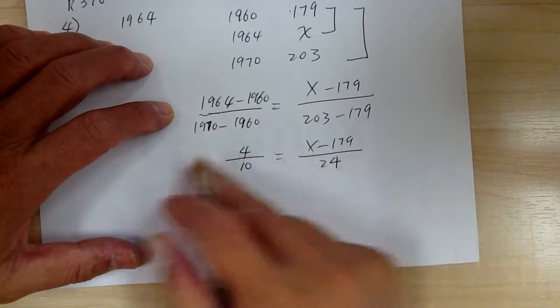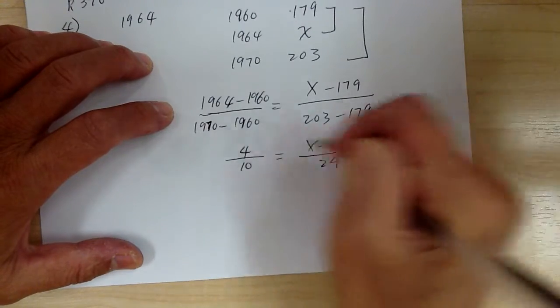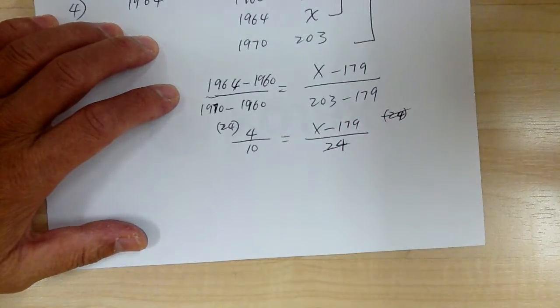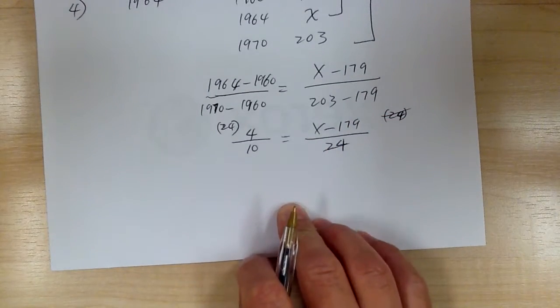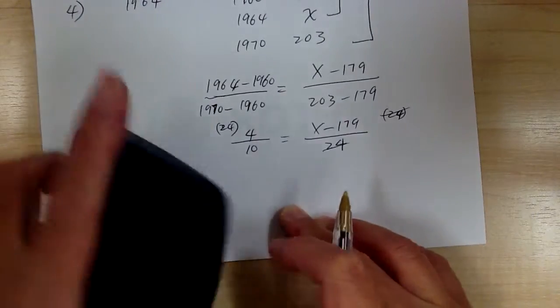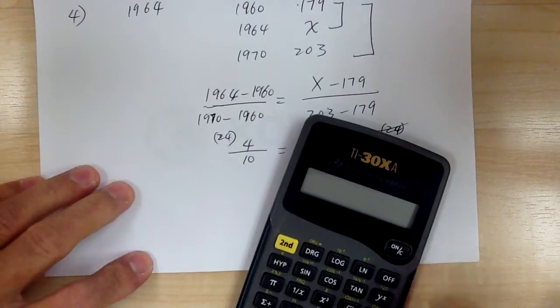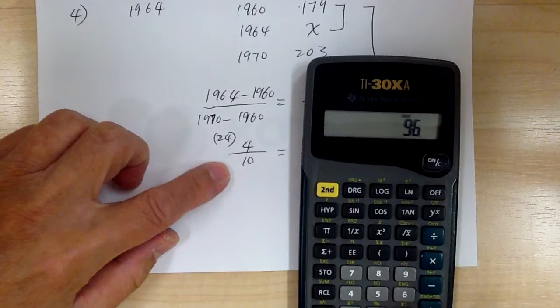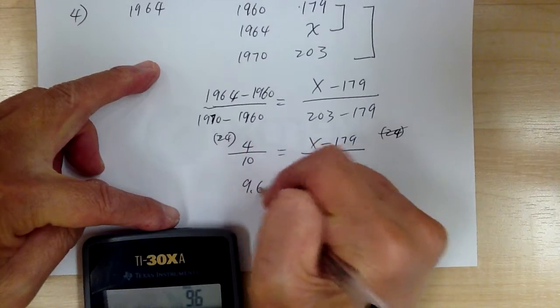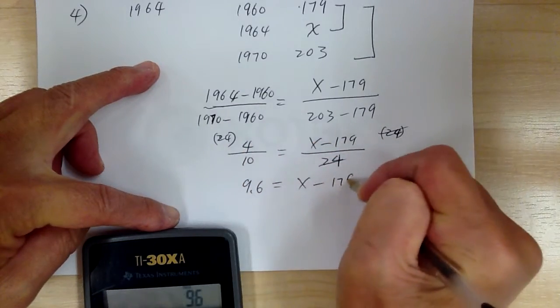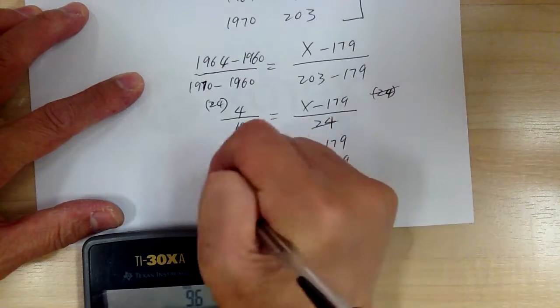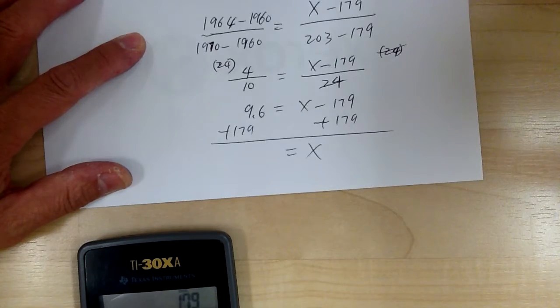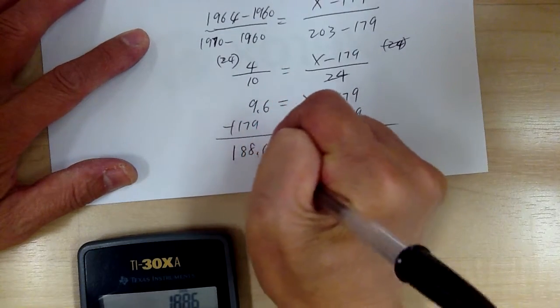And then go ahead and multiply by 24 to cancel out. So get your calculator, you work it out. So 24 times 4 divided by 10 equal to 9.6. So 9.6 equal to X minus 179. So plus 179. Plus 179. So X equal to 188.6 million.